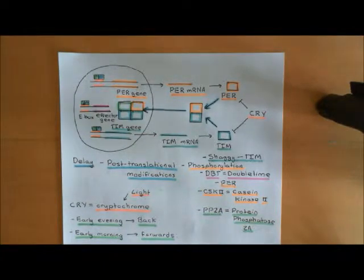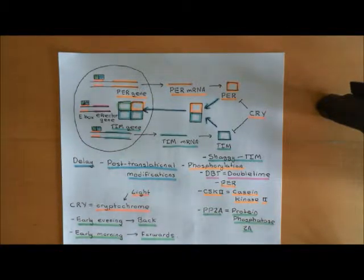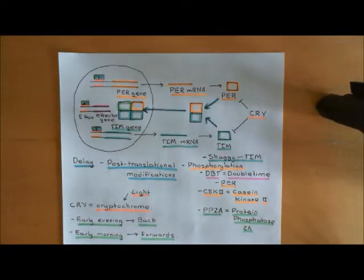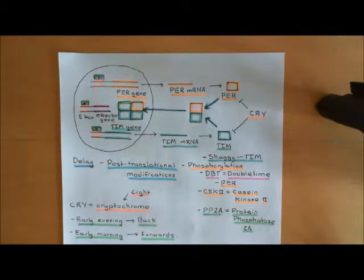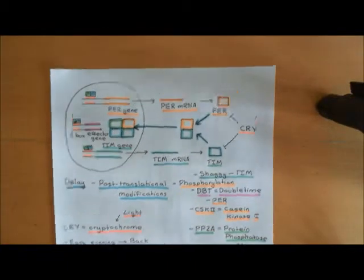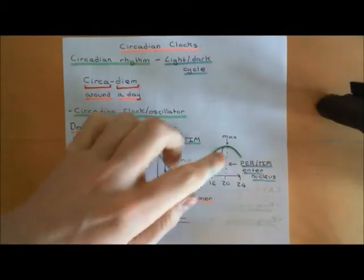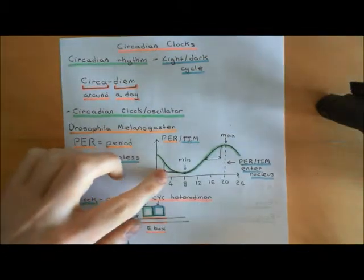So now period and timeless production is going to stop during the night, and then degradation will dominate because you're not producing anything but you are still destroying the period and timeless proteins. So now period and timeless levels within the cytoplasm of the cell are going to start to fall down from 8 o'clock onwards — this is the downstroke of the graph here.